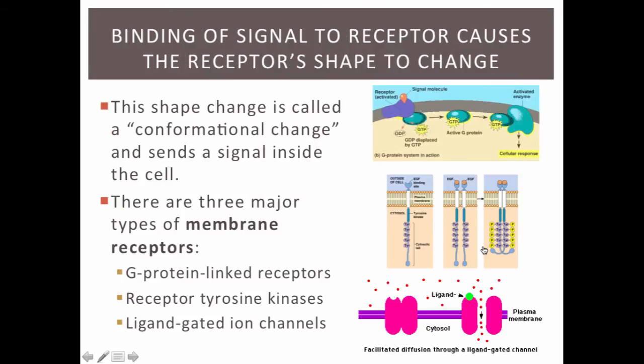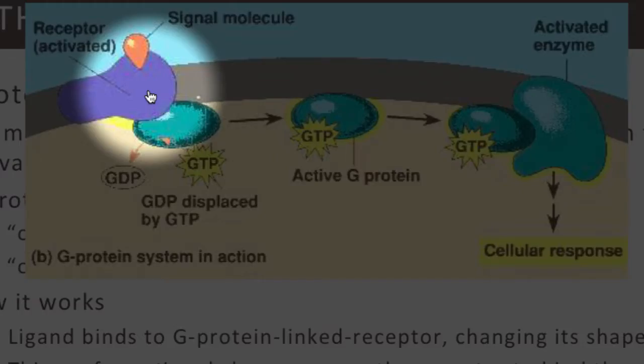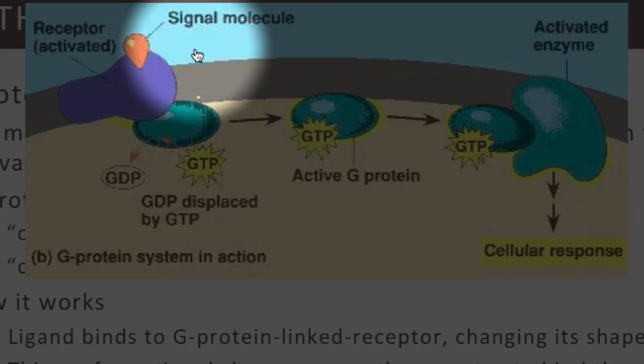There are three main types of membrane receptors: G-protein-linked receptors, receptor tyrosine kinases, and ligand-gated ion channels. A G-protein-linked receptor is a protein found in the cell membrane that is associated with a G-protein. When a ligand binds to the receptor protein, the receptor changes shape and activates the G-protein, which in turn activates an enzyme. The G-protein is like a switch for the signal — it is off when attached to GDP, and on when attached to GTP.